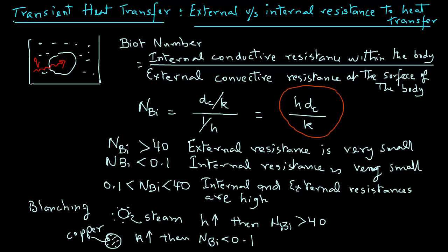The solutions to the partial differential equation that describes transient heat transfer differ for these three cases: negligible internal resistance, negligible surface resistance, and cases where both the surface resistance and the internal resistance are significant.